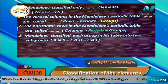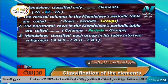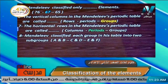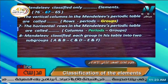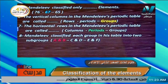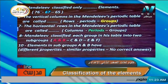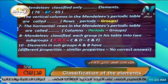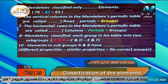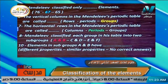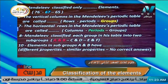Mendeleev classified each group in his table into two subgroups — A and B. Elements in subgroups A and B have different properties, not similar properties. That is why Mendeleev classified each group into two subgroups A and B — because they have different properties.